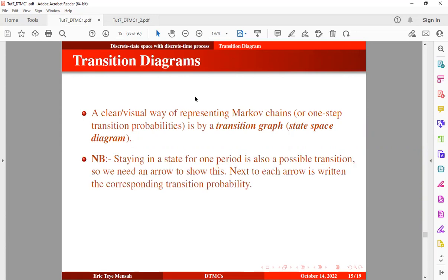Now take note that staying in a state for one period is also a possible transition, so we need an arrow to show this, and next to each arrow is written the corresponding transition probability.